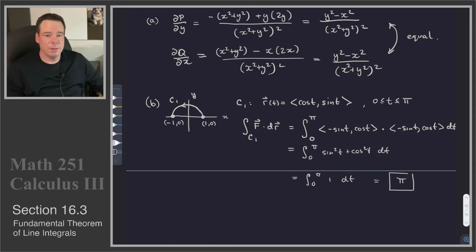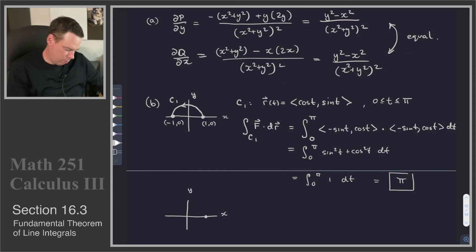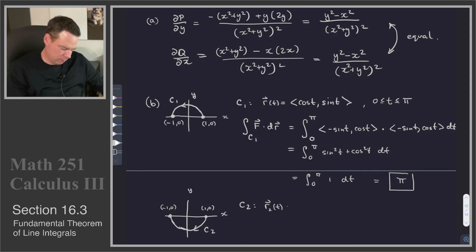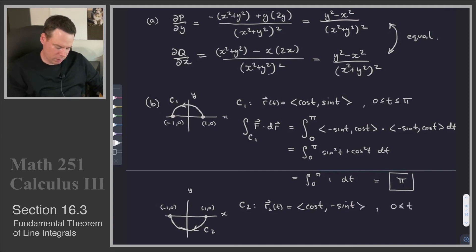If the integral were independent of path, I should always get π no matter what path I take from (1,0) to (-1,0). Now I'll take a path going the other way around — the lower part of the circle of radius 1. I'll call that path C2, parametrized as r₂(t) = (cos t, -sin t), still with t going from 0 to π.